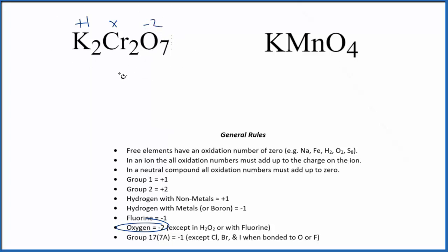So again, we know all of this is going to add up to zero. So we could say 2 times 1 plus, that's 2 plus 2 times X, since we don't know what the chromium is, and then 7 times negative 2 is minus 14. All of that equals zero for our neutral compound.